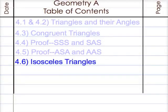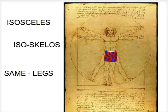Section 4.6 is all about isosceles triangles. The word isosceles comes from the Greek root iso and skelos.